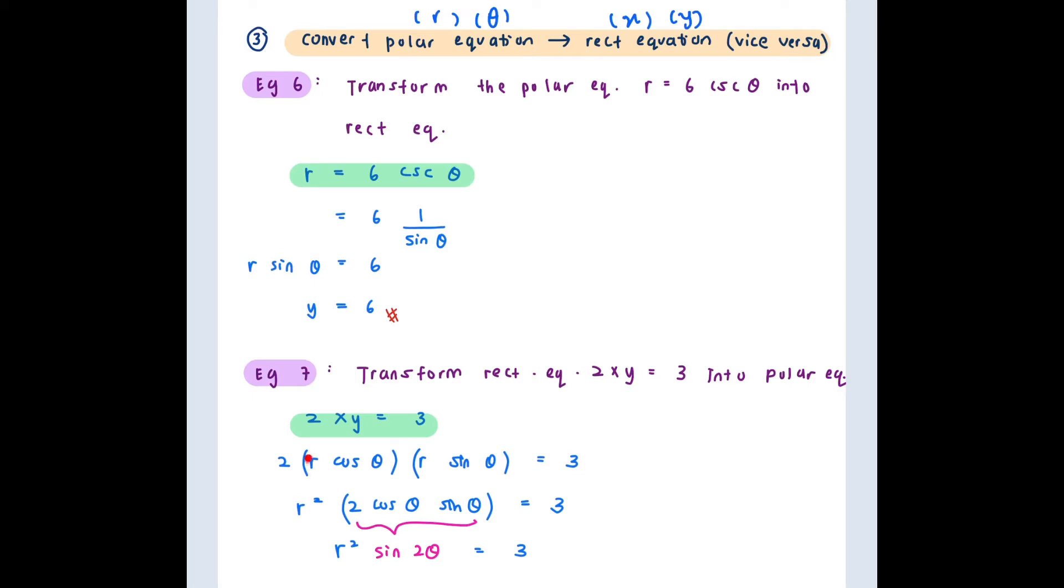So now let's rearrange. R and R is just R squared and then you are left with 2 cos theta sin theta. So from the previous chapter, we know that 2 cos theta sin theta is just sin 2 theta. Double angle. So let's just substitute this here.